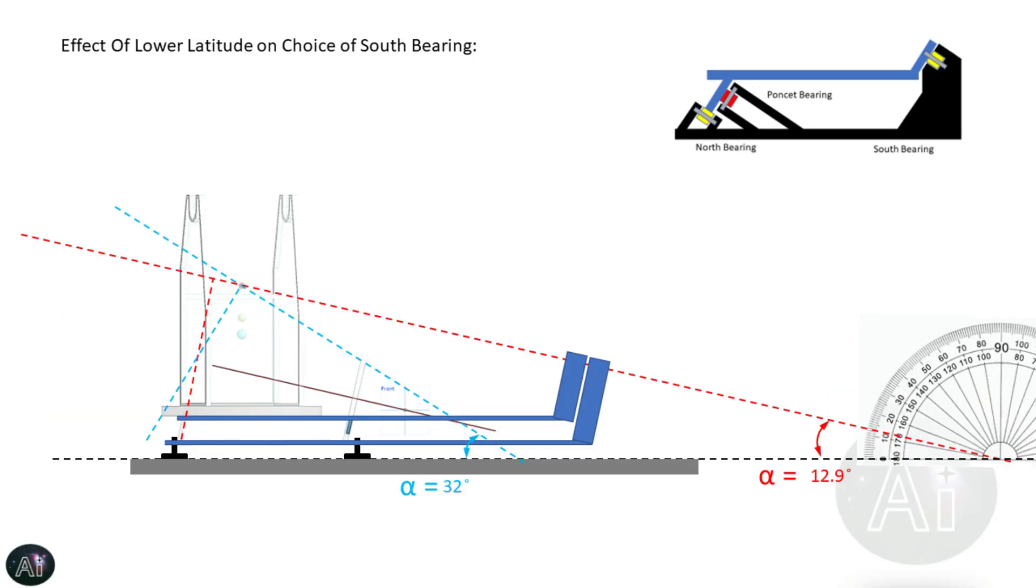Now for a single spindle type south bearing, if the polar axis has to pass through the center of gravity, you can see for a lower latitude in this case 12.9 degrees north the equatorial platform will be stretched. However, now we can see if we reduce the length, the height of the south bearing will go very high. Obviously we are not making a statue of Liberty over here, but jokes apart, you get the point how aesthetically bad this equatorial platform is going to look like.